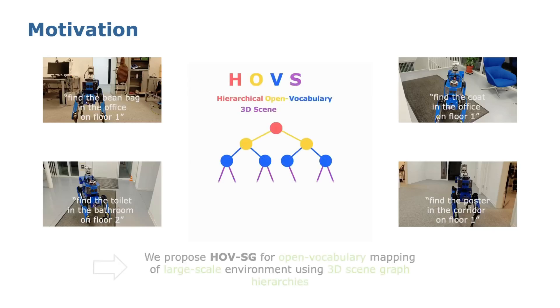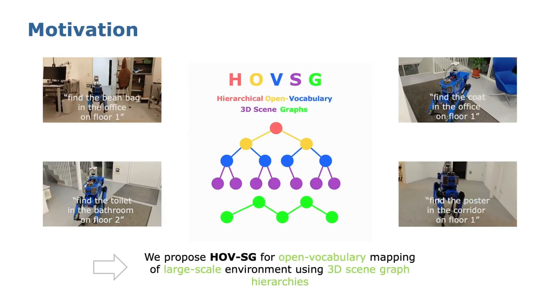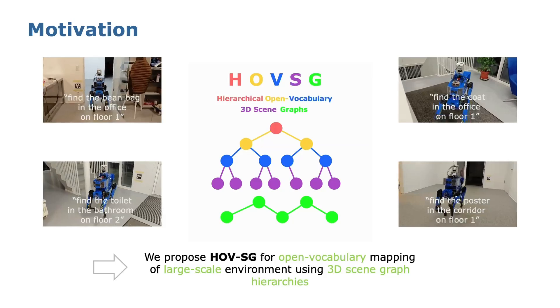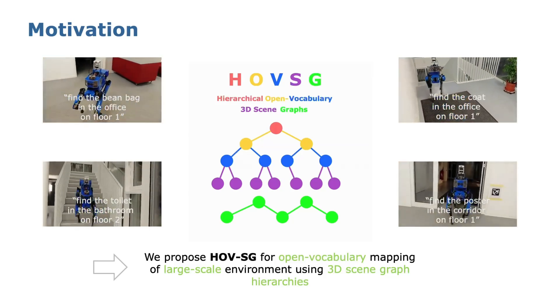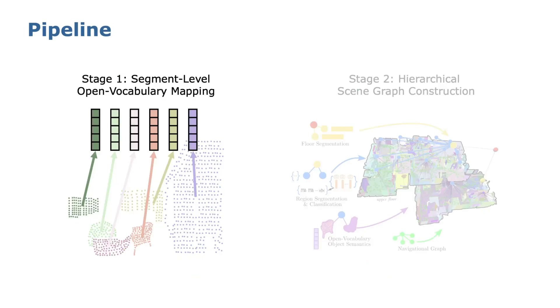In our work, we introduce HofSG for open vocabulary mapping of large-scale environments using 3D scene graph hierarchy. The creation of HofSG involves two stages, namely creating a segment-level open vocabulary map and constructing a scene graph.